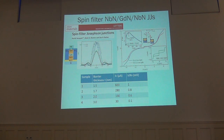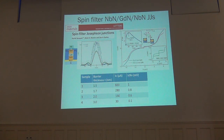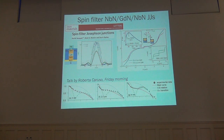Spin-filter Josephson junctions have been realized in Cambridge. They are the first, and up to now solely, Josephson junctions with a ferromagnetic insulator barrier, which is gadolinium nitride (GdN). Due to the exchange field in the barrier, spin-up and spin-down electrons see different barrier heights, and this results in a spin polarization. We have measured these junctions for different values of the barrier thickness, therefore in a wide range of critical current values, and these junctions present unconventional features.